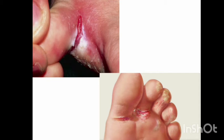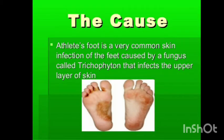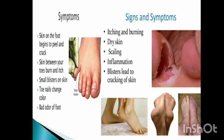This disease is called athlete's foot, which is caused by a fungus — a very common fungal disease. What happens is the skin on the foot begins to peel and crack, the skin between your toes burns and itches, and small blisters are seen on the skin. These are all the symptoms of athlete's foot.